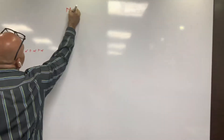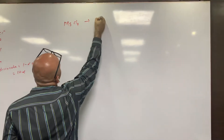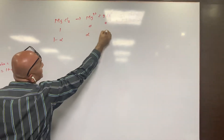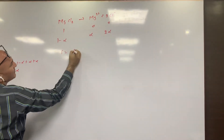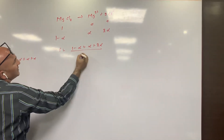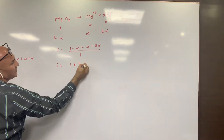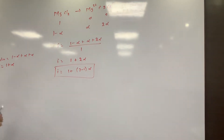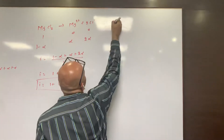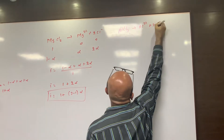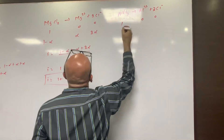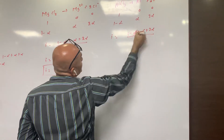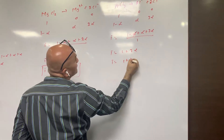Now take another example: MgCl₂ → Mg²⁺ + 2Cl⁻. Initially 1, 0, 0. When α fraction dissociates, undissociated = 1 − α, Mg²⁺ = α, Cl⁻ = 2α. So i = (1 − α + α + 2α) / 1 = 1 + 2α. I can write this as i = 1 + (3 − 1)α. Then for AlCl₃ → Al³⁺ + 3Cl⁻: undissociated = 1 − α, Al³⁺ = α, Cl⁻ = 3α, so i = 1 + 3α = 1 + (4 − 1)α.